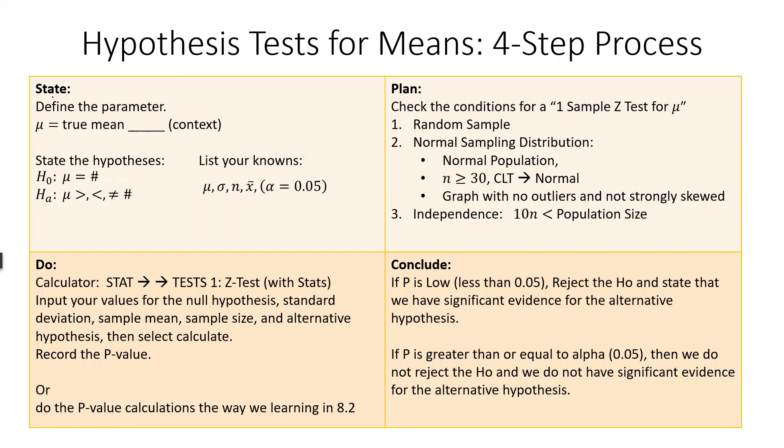The first thing we do is draw a big X on our paper if it's not already there. First thing we're going to do is, in this box, we're going to state some things. We're going to define what mu stands for. It's always the true mean, and then we fill it in with some context. We state our hypothesis. Our null hypothesis will be that the mean is equal to some number. Our alternative hypothesis will either be that it's greater than, less than, or not equal to that same number.